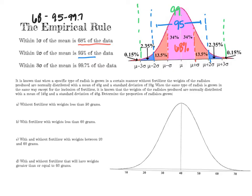Within three standard deviations of the mean is 99.7 percent of all the data. That means almost all the data sits within three standard deviations. The remaining 0.3 percent is outside, split equally on both sides — so 0.15 percent on the left and 0.15 percent on the right.